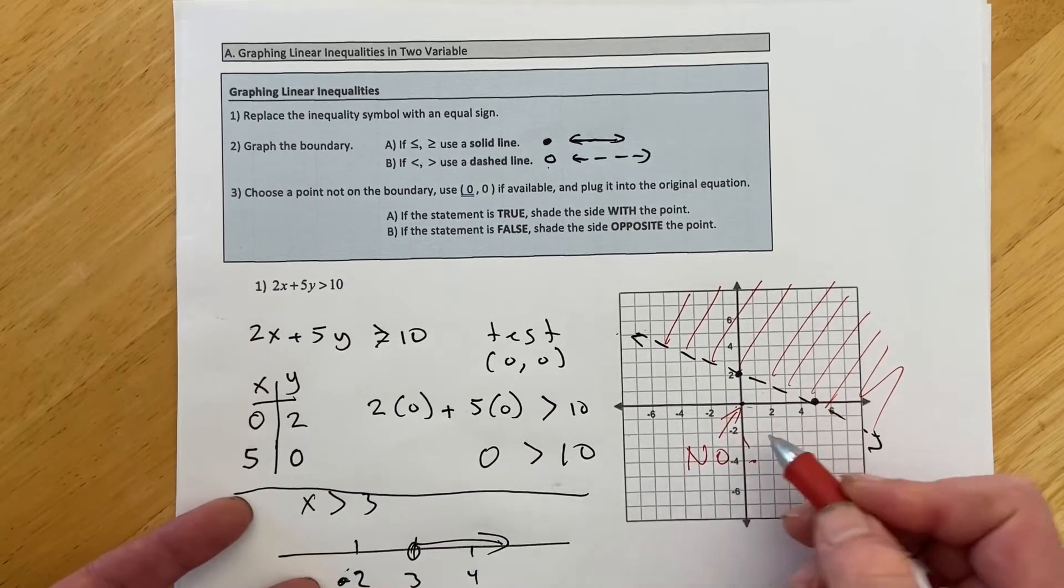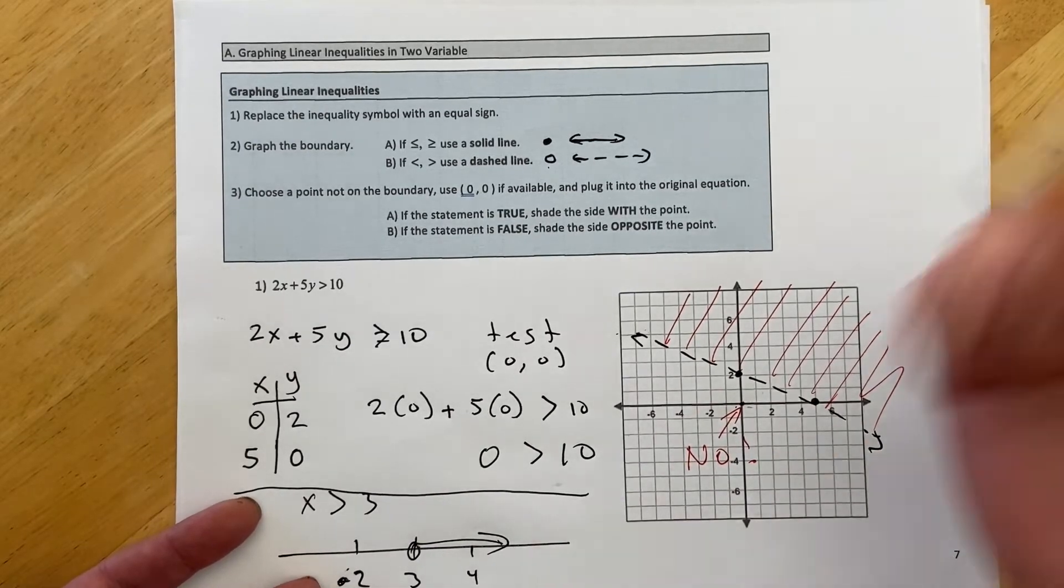If you test the point and it works, you color it. If you test the point and it doesn't work, color the other side.